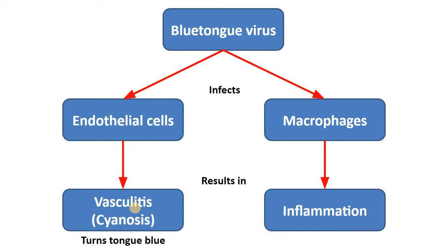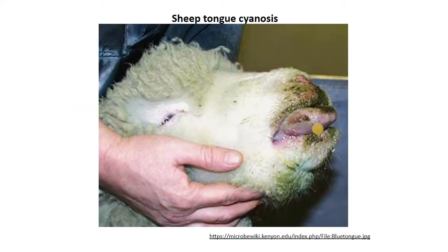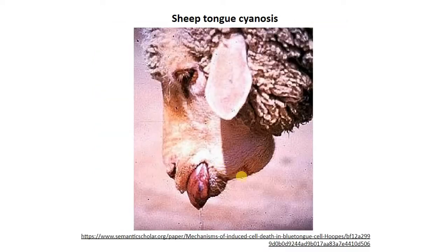And this is how this disease originally got its name, from the blue discoloration of the tongue. Blue tongue virus will also infect macrophages and dendritic cells, which drive a robust inflammation. Here is an example of a swollen, protruded, and cyanotic blue tongue.